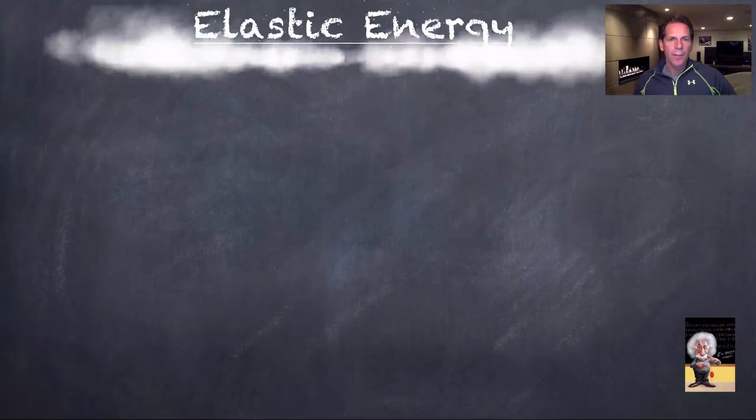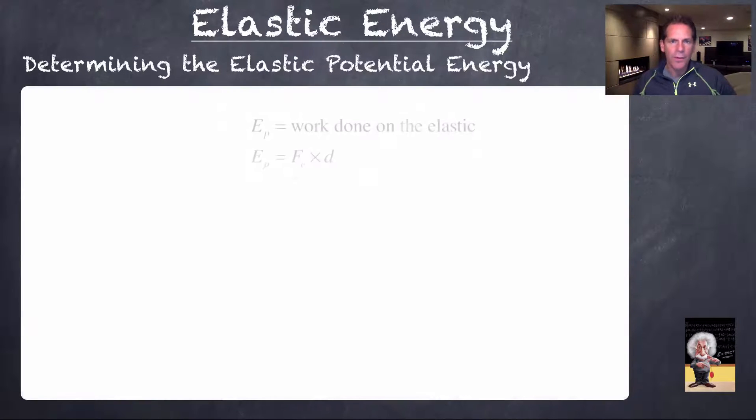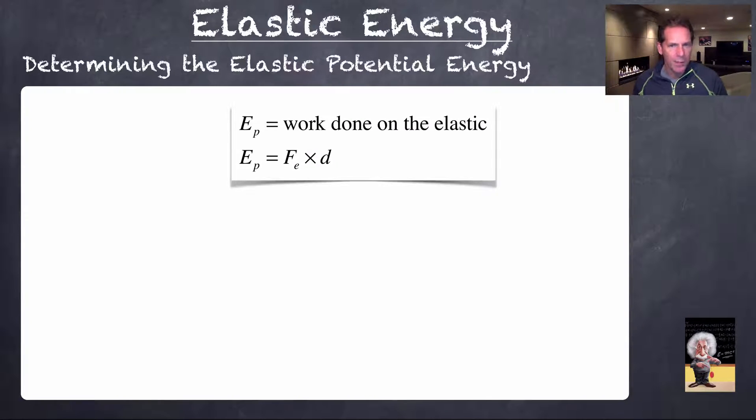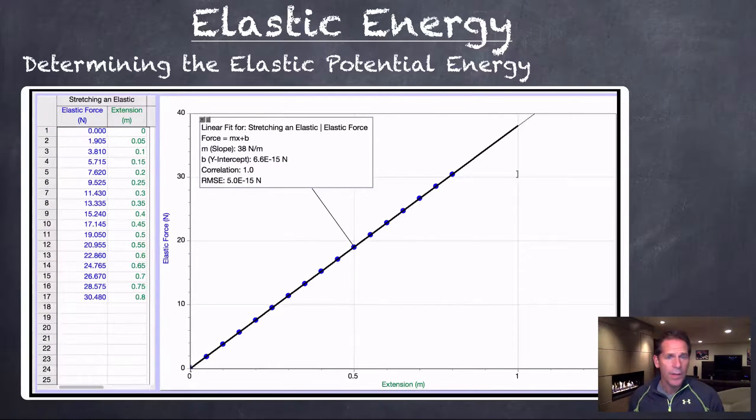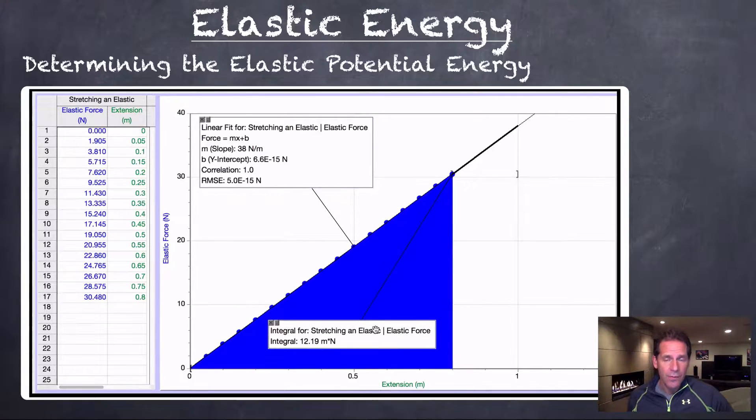The second part of the experiment focuses on the elastic potential energy stored in the rubber band. So in this case, recall that the potential energy is equal to the work done by a force. In this case, the force is the elastic force, and d would be the distance the elastic band is extended. So we're looking at a plot of force versus distance. If we had one that matched the ideal elastic, it would extend right back to the origin, as shown here. The area underneath the graph would be equal to the force times the distance, in this case shown in blue. That would be the potential energy stored within the elastic.